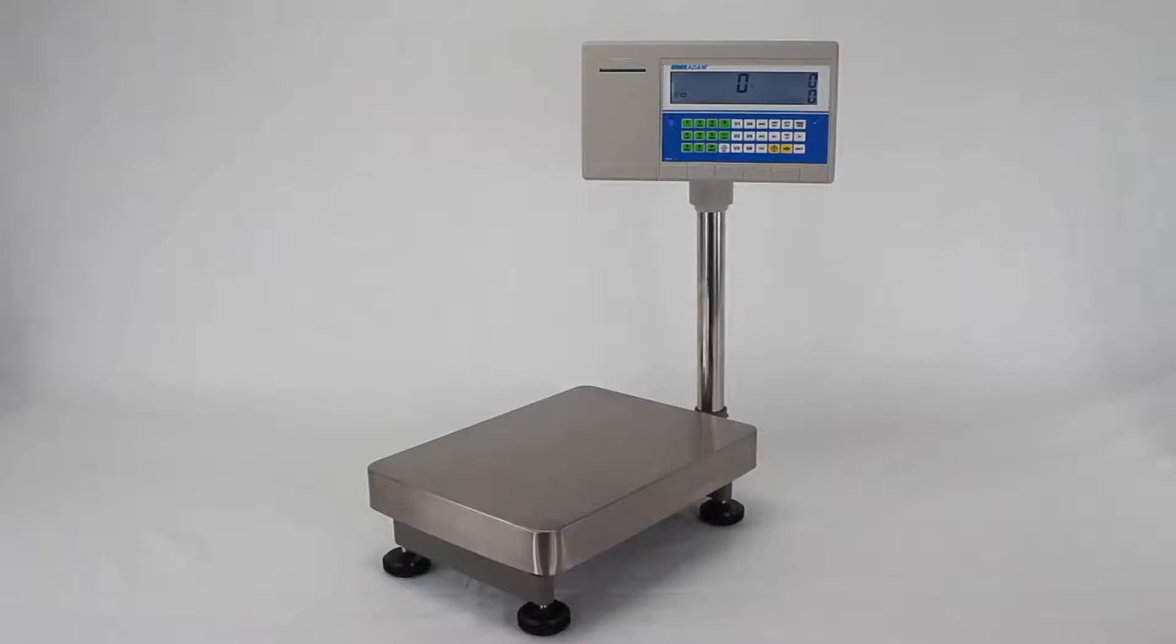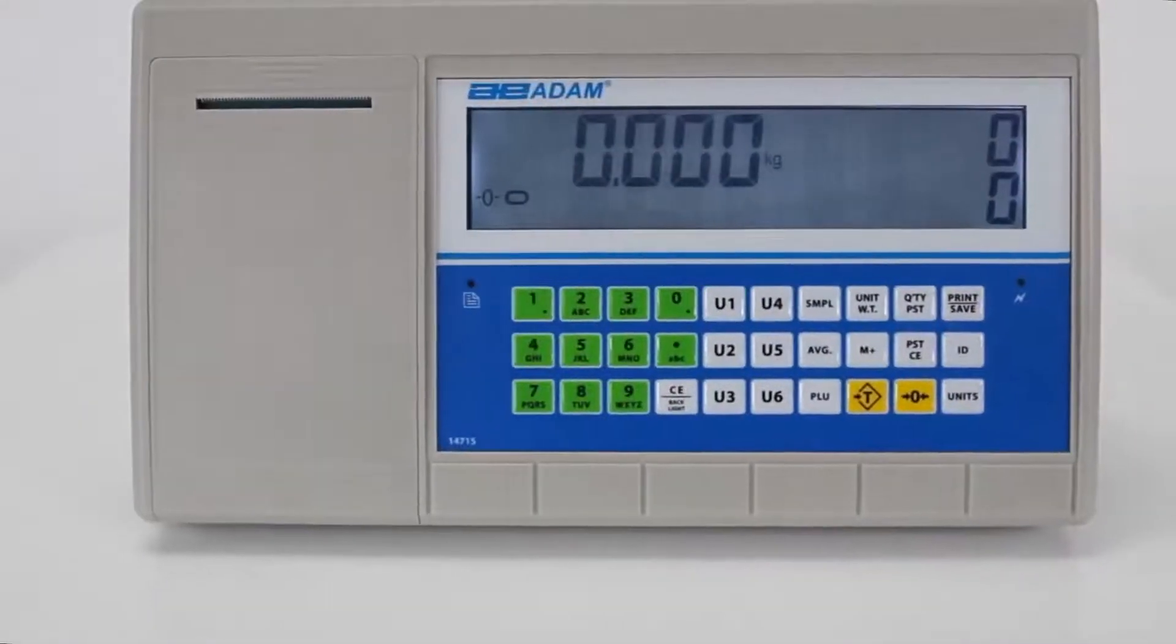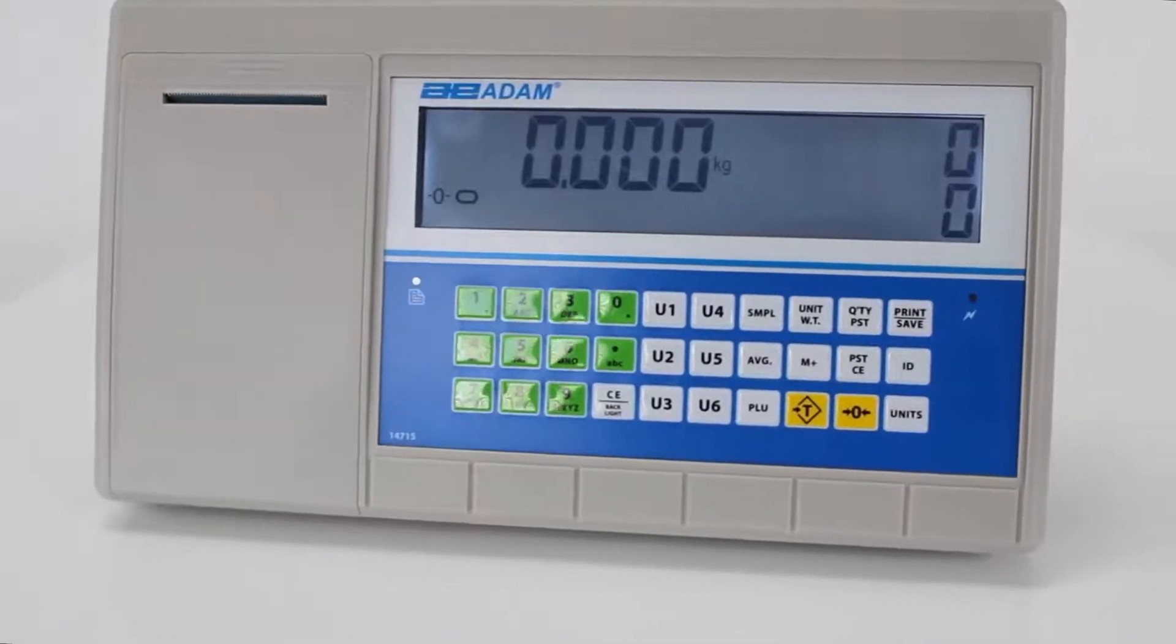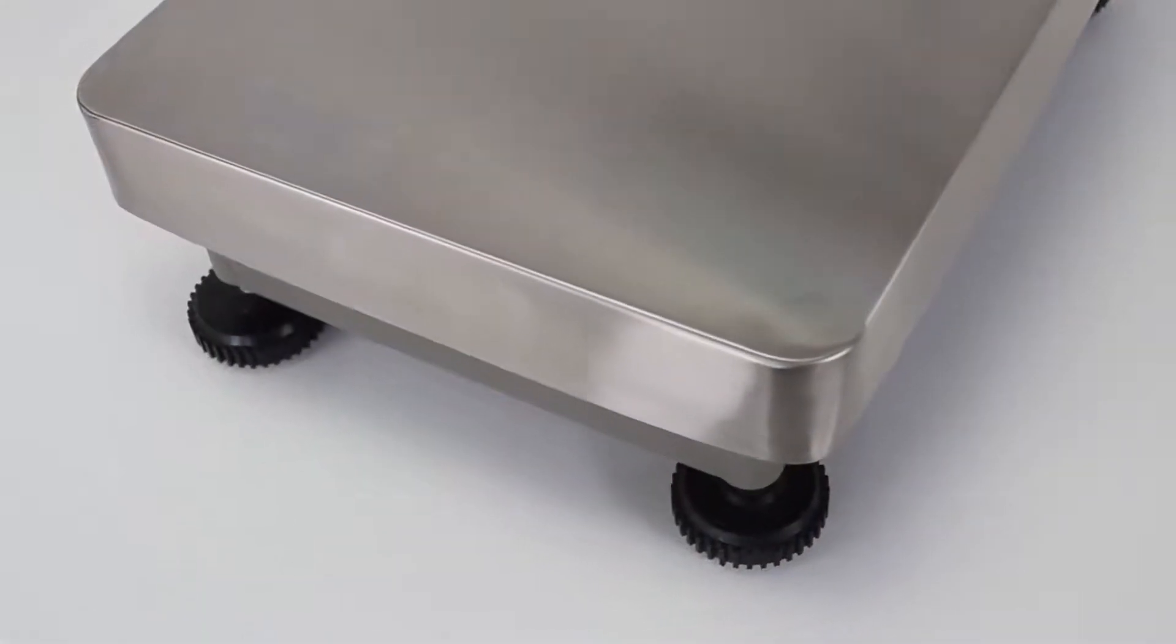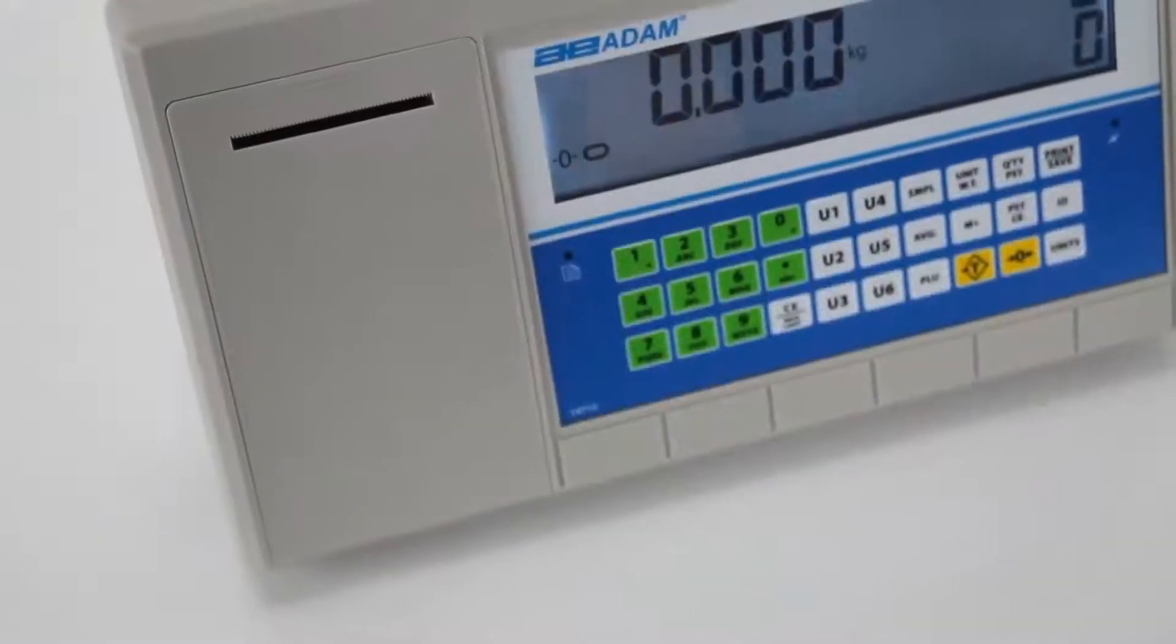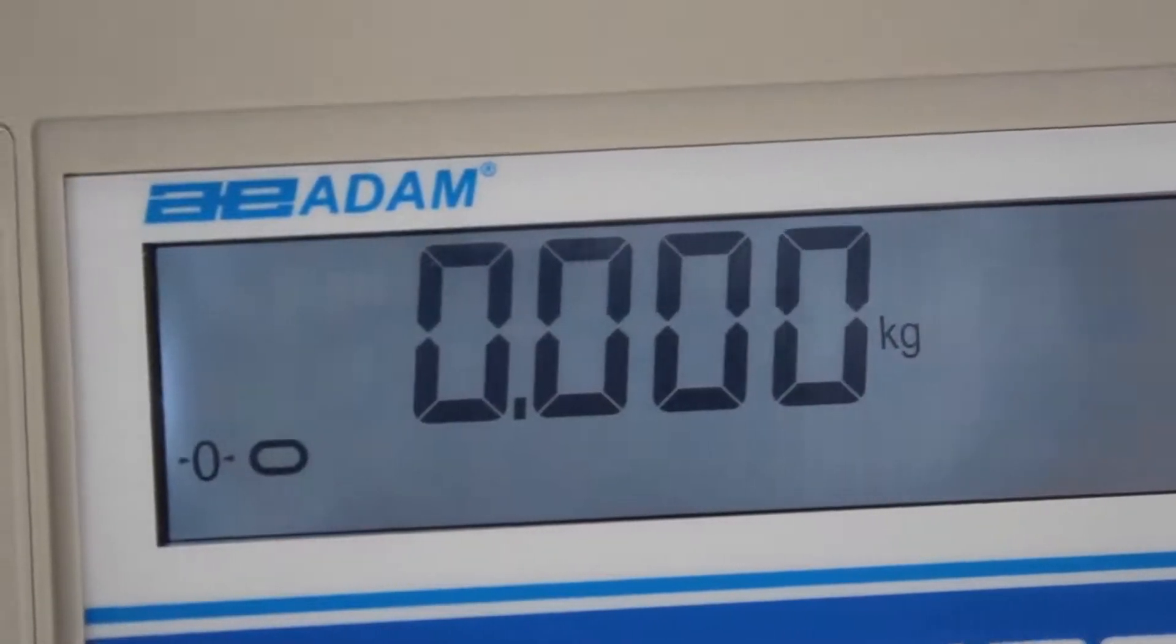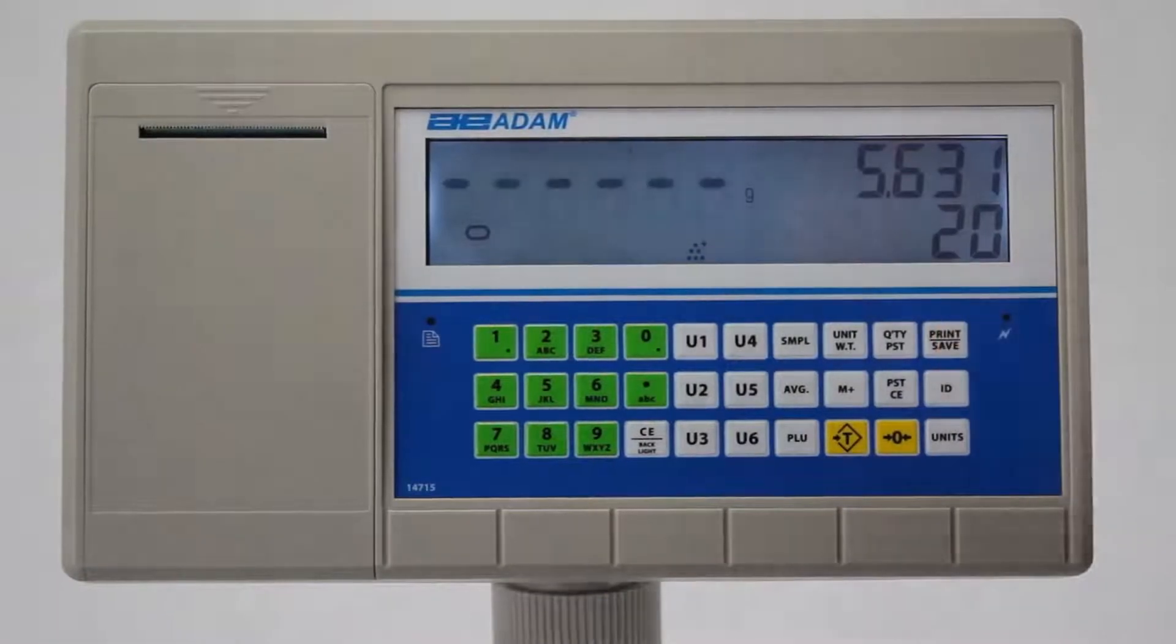Introducing Adam Equipment's BCT family of counting scales and the AE504 Industrial Indicator. With the BCT's die-cast aluminum base and AE504's ABS plastic housing, extra-large display digits and built-in label printer